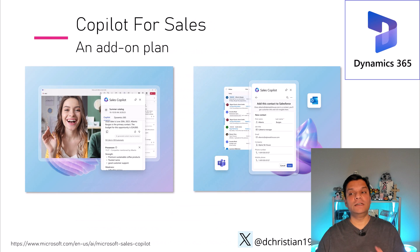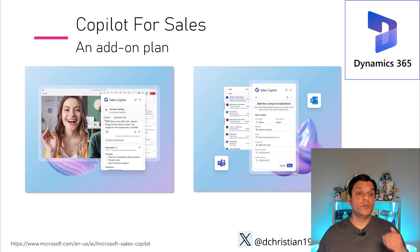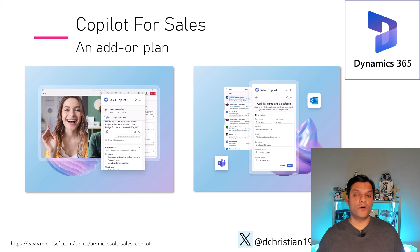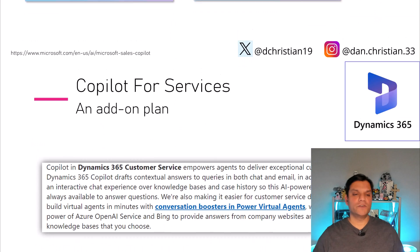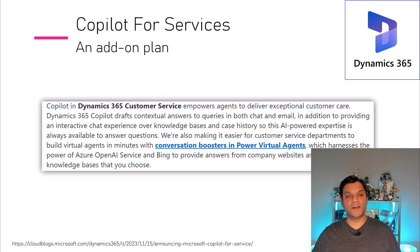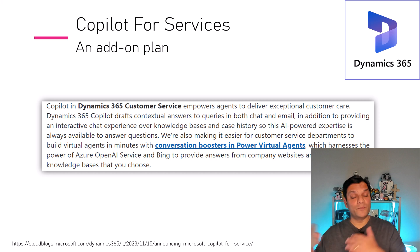Let's transition over to Copilot for Dynamics 365. There are two different Copilots here. One is Copilot for Sales, which is an add-on — in addition to an existing Dynamics 365 Sales license, you need to buy the Copilot add-on. Copilot for Sales integrates directly with Microsoft Teams, so you can have a discussion with your Copilot to get information about your Dynamics 365 Sales application. Copilot for Services also works similarly: Copilot in Dynamics 365 Customer Service empowers agents to deliver exceptional care and makes it easier to build virtual agents in minutes using Microsoft Copilot Studio, harnessing Azure OpenAI Service and Bing.